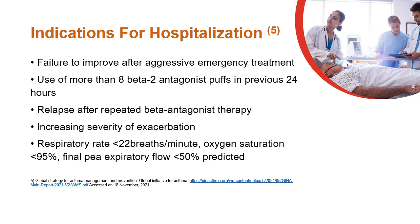Indications for hospitalization include failure to improve even after aggressive emergency treatment, use of more than 8 beta-2 agonist puffs in the previous 24 hours, relapse after repeated beta-2 agonist therapy, and increasing severity of exacerbation with respiratory rate greater than 22 breaths per minute, oxygen saturation below 95 percent, and final peak expiratory flow less than 50 percent predicted.